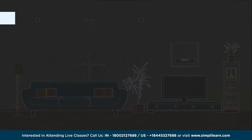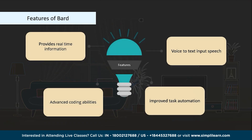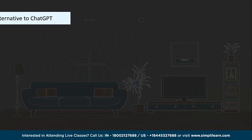Some of Google Bard's key features include: providing real-time information — unlike ChatGPT, which only provides information up to September 2021 in some cases, Bard can give current information. It also supports voice-to-text input, has improved task automation helping Google better comprehend the intent behind search queries to give more accurate results, and it has more advanced coding abilities than ChatGPT.